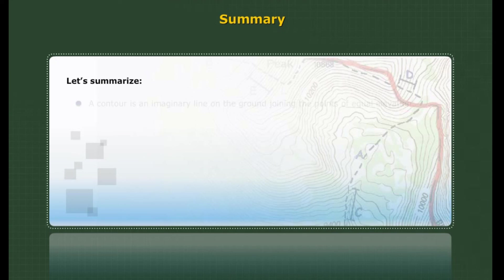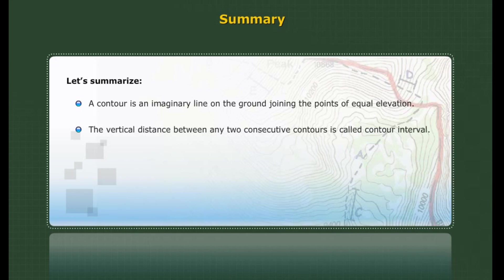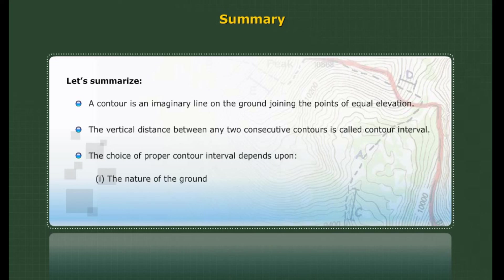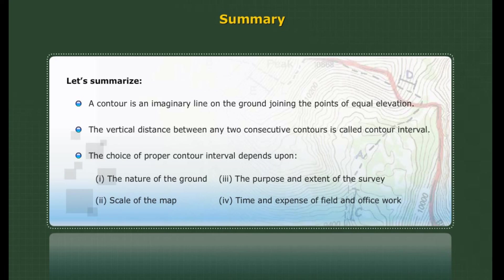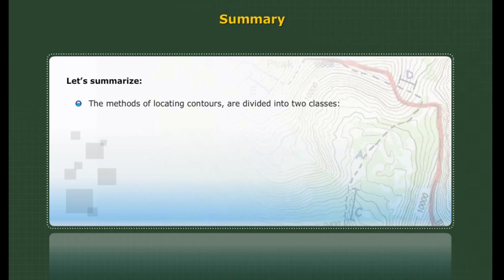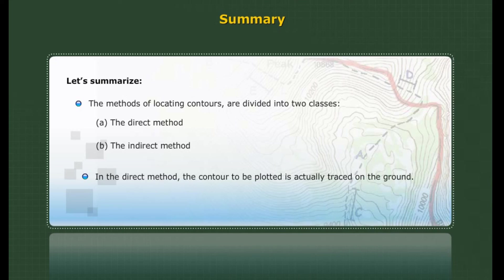Summary. A contour is an imaginary line on the ground joining the points of equal elevation. The vertical distance between any two consecutive contours is called contour interval. The choice of proper contour interval depends upon: 1. the nature of the ground, 2. scale of the map, 3. the purpose and extent of the survey, and 4. time and expense of field and office work. The methods of locating contours are divided into two classes: A. the direct method, in which the contour to be plotted is actually traced on the ground, and B. the indirect method, in which suitable guide points are selected and surveyed.